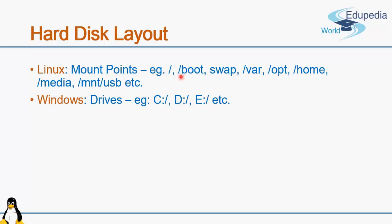Other key partitions include boot and swap. These three — root, boot, and swap — are the most critical partitions, and you must have at least these three mount points when installing a Linux operating system. Beyond these, optional mount points such as var, opt, home, and media can also be created. We will learn about all of these in detail when we cover Linux installation in the coming videos.